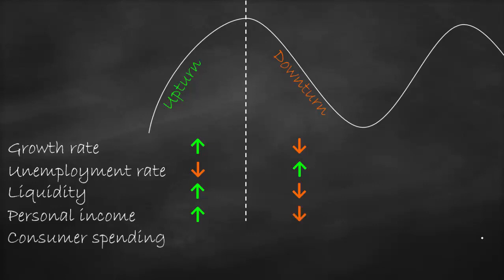What about consumer spending? Since unemployment rate is low and people produce a lot, consumption will increase. During downturn, people lose their jobs, and therefore it will decline. What about corporate profit? Since the economy is growing, companies are making profit, while during the downturn corporate profit is declining or sometimes you make a loss.